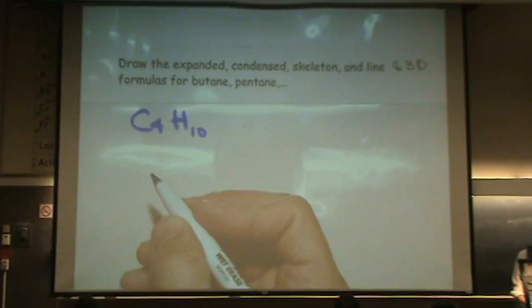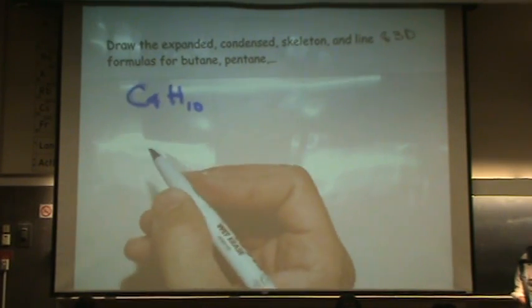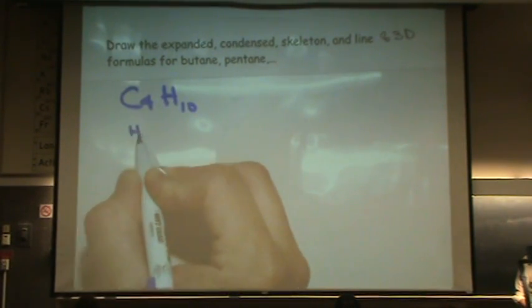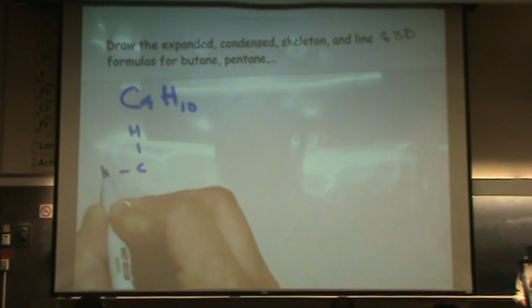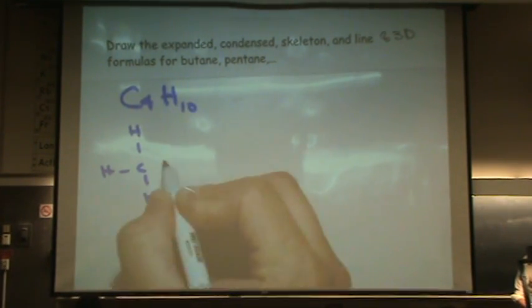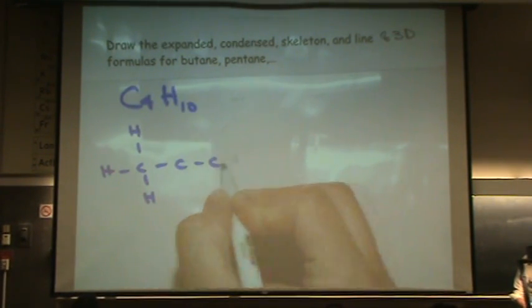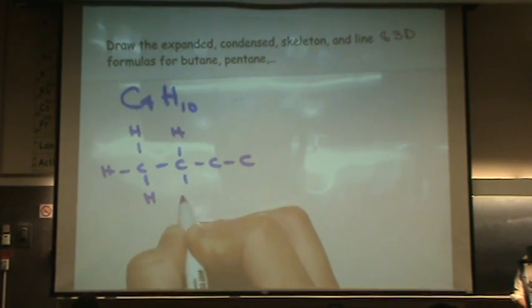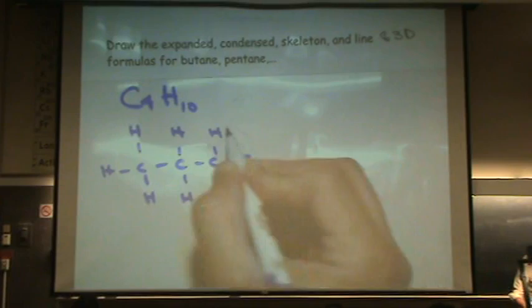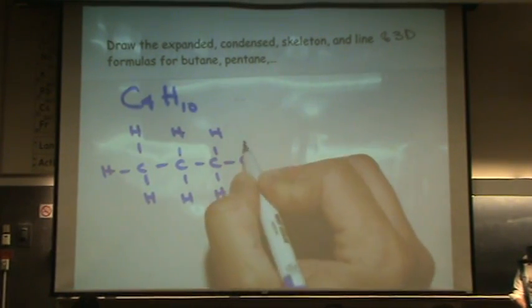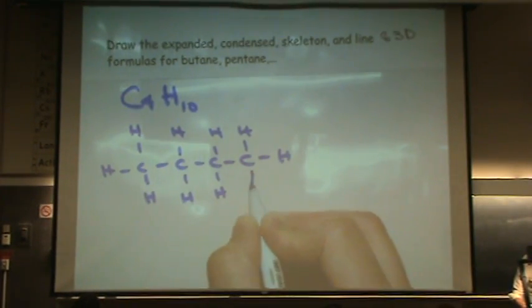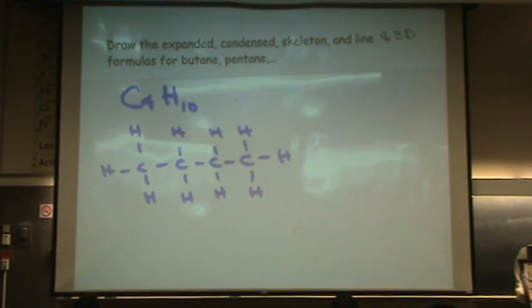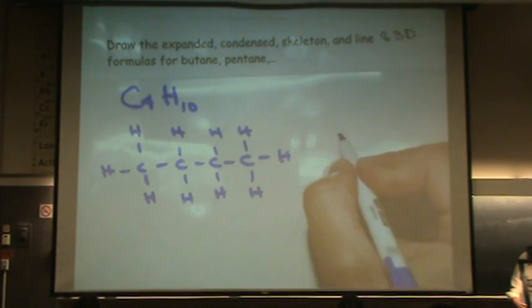For the expanded, this is the one that looks like the Lewis diagram. You draw four carbons in a row with all hydrogens on them. Remember that each carbon will have four bonds, so each carbon does not have the same number of hydrogens on it. The end carbons have three hydrogens and the middle carbons have two. This is called the expanded.